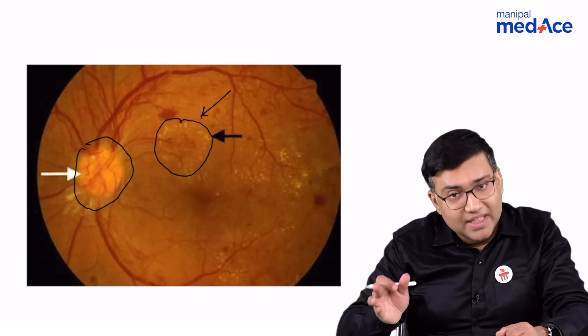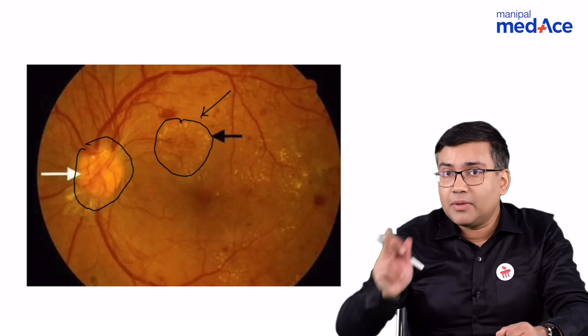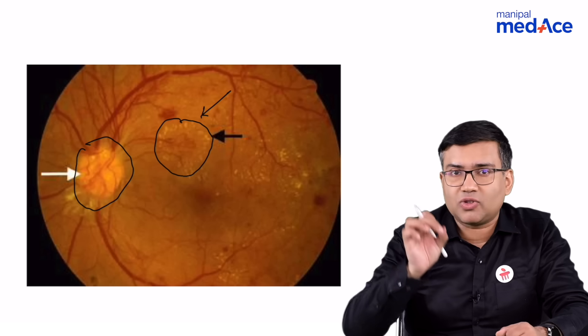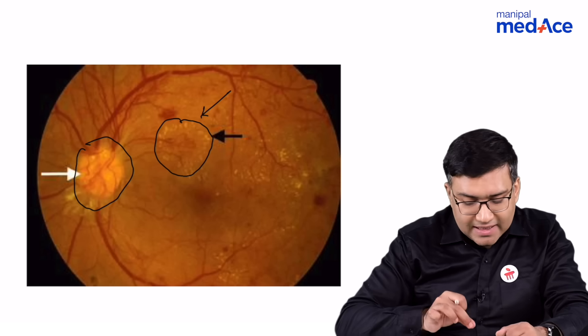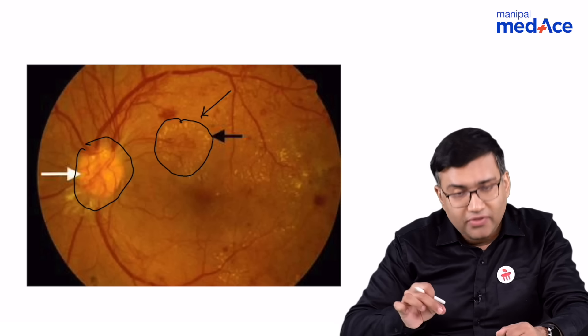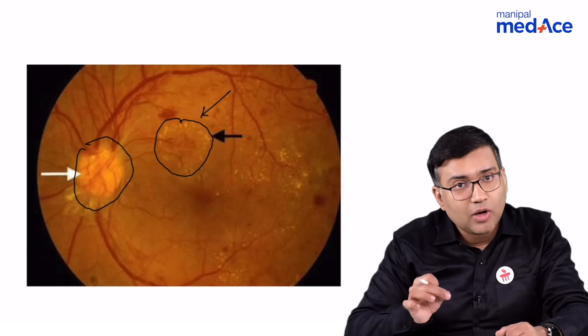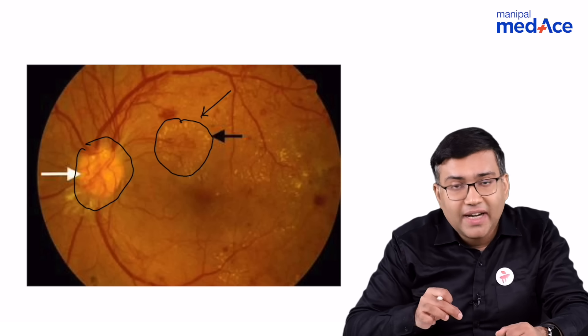you would see hemorrhages and exudates, but the most important pathognomonic feature is the presence of new vascular fronds around the optic nerve head, in the retina, or both.